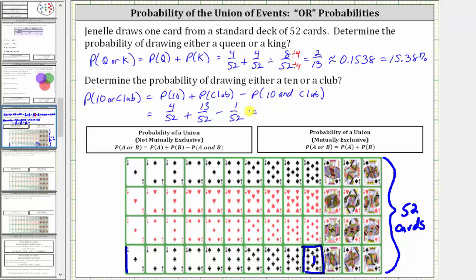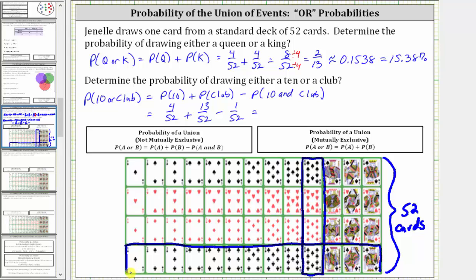Let's see why we have to subtract this probability. When determining the probability of a ten, we had four favorable outcomes. When determining the probability of a club, we had thirteen favorable outcomes. But by adding these favorable outcomes, we counted the ten of clubs twice, and we should only count it once — which is why we subtract the probability of a ten and a club. This is because the two events are not mutually exclusive, since it is possible for a card to be both a ten and a club.